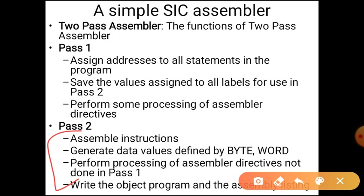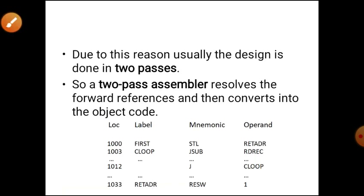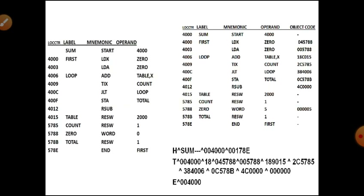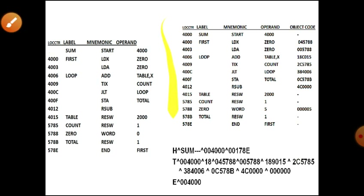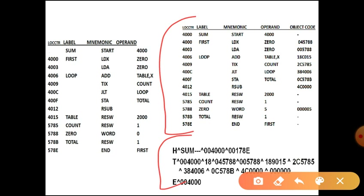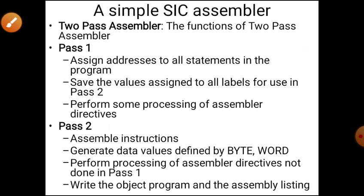During pass two, instructions are assembled and machine instructions are generated. For constants, the machine representation code is also generated. Processing of assembler directives not done in pass one is performed here. Pass two generates two outputs: an object program and an assembly listing. For example, LDX gets its object code generated, and a constant like WORD 5 gets its machine representation generated.